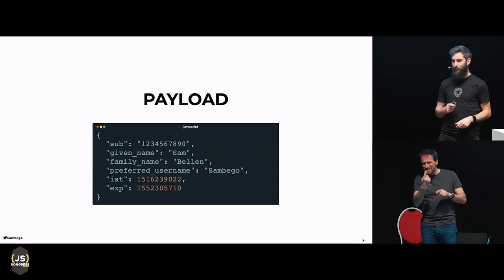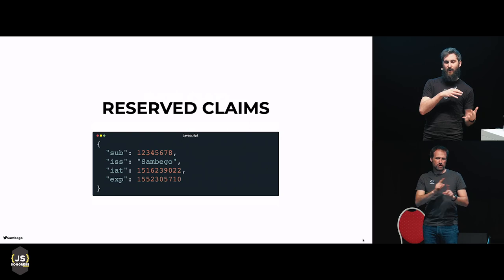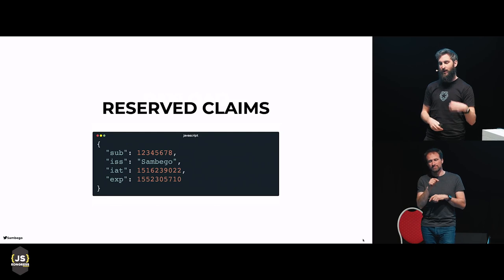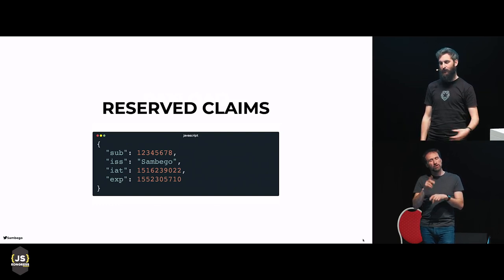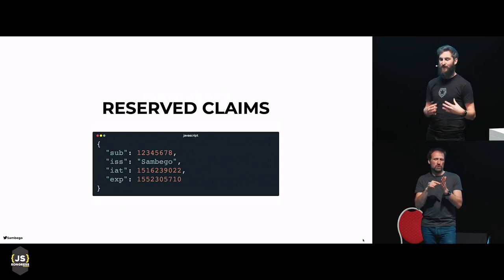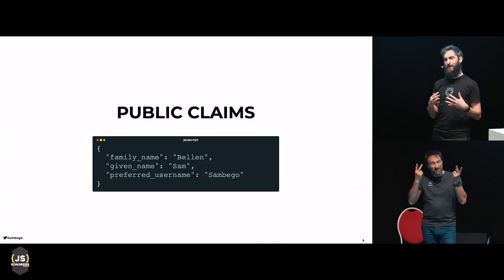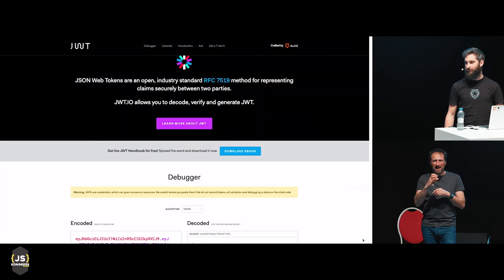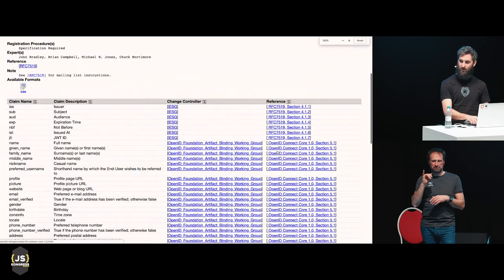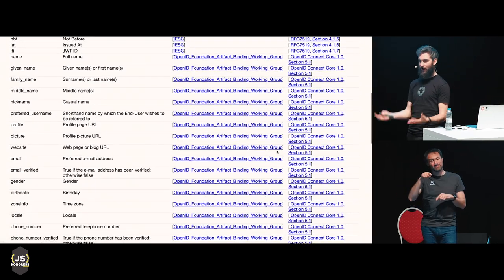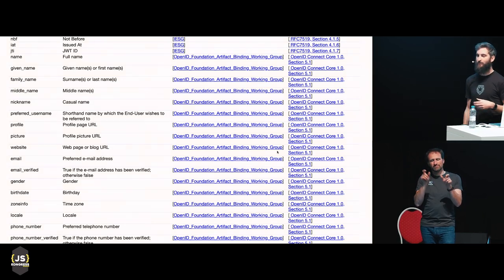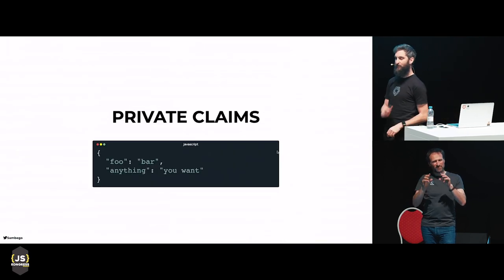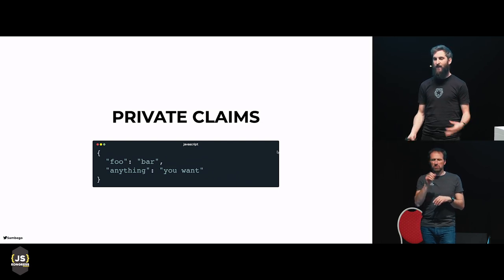A JSON Web Token can have its own expiry date, so you don't need to check its validity on your server in your database — it can tell you if it's already expired. There are different kinds of claims — a claim is a key-value pair. Reserved claims are defined by the spec: subject, issuer, issued-at, expiry date. Public claims are defined by IANA — a whole list of commonly used claims by APIs. And then there are private claims, which can be anything you want to put inside a JSON Web Token, as long as it's valid JSON.